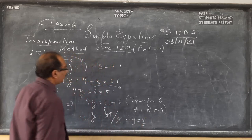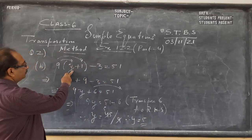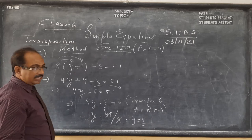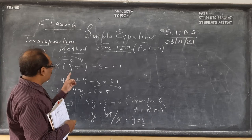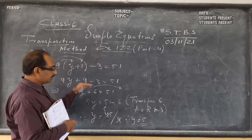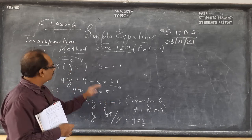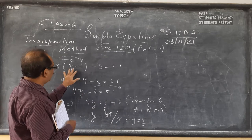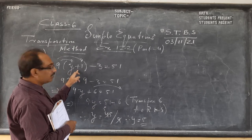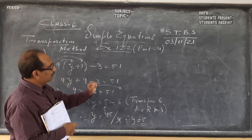To check or verify, we put 5 here on the left hand side to see whether the answer is right or not. 5 plus 1 is 6, 9 sixes are 54, minus 3 is 51.